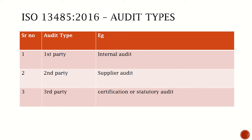The first party audit is an internal audit. The second party audit is a supplier audit, normally done when we are having any new supplier — as per the agreement between the supplier and the organization, the audit is planned and conducted. The third party audit is a certification audit, like an ISO certification audit.